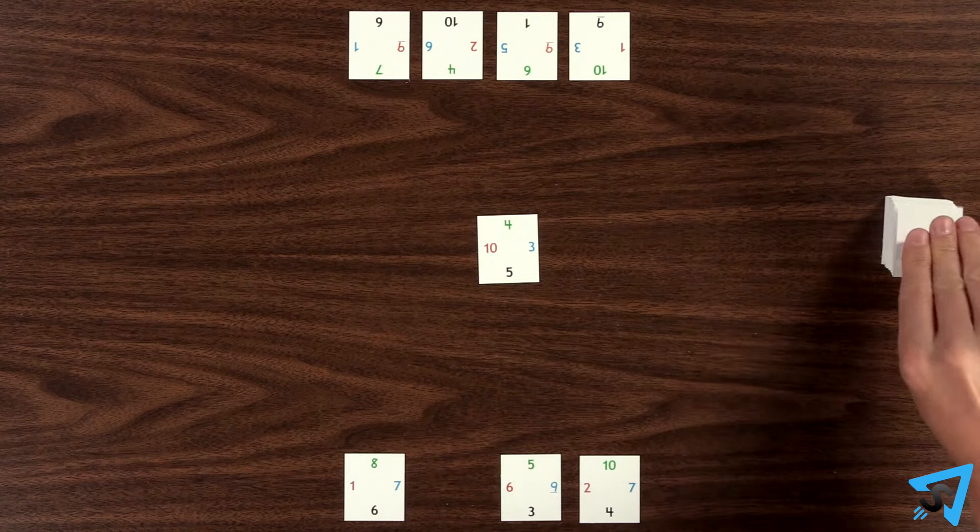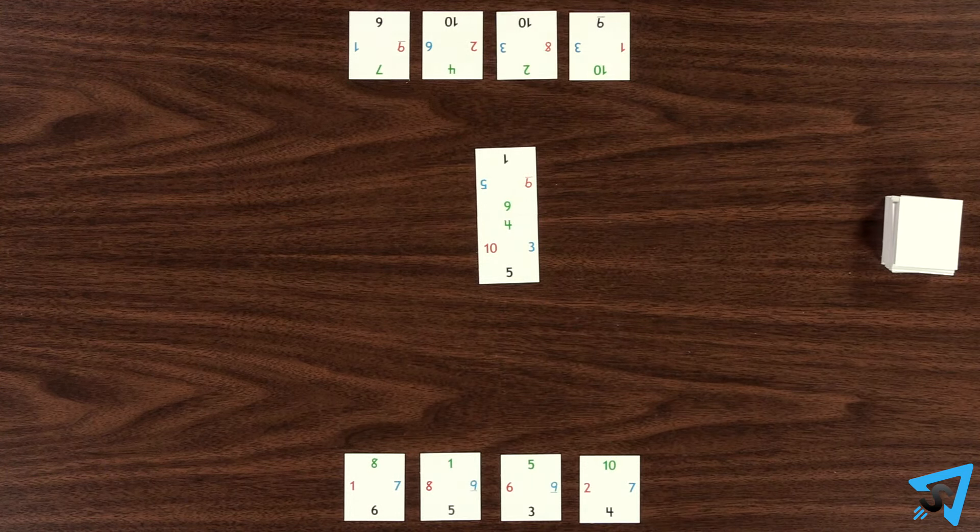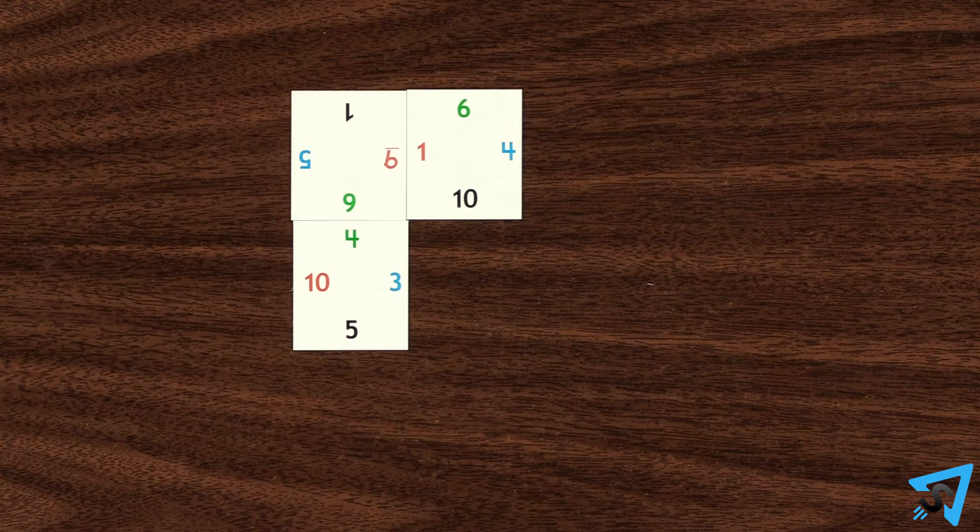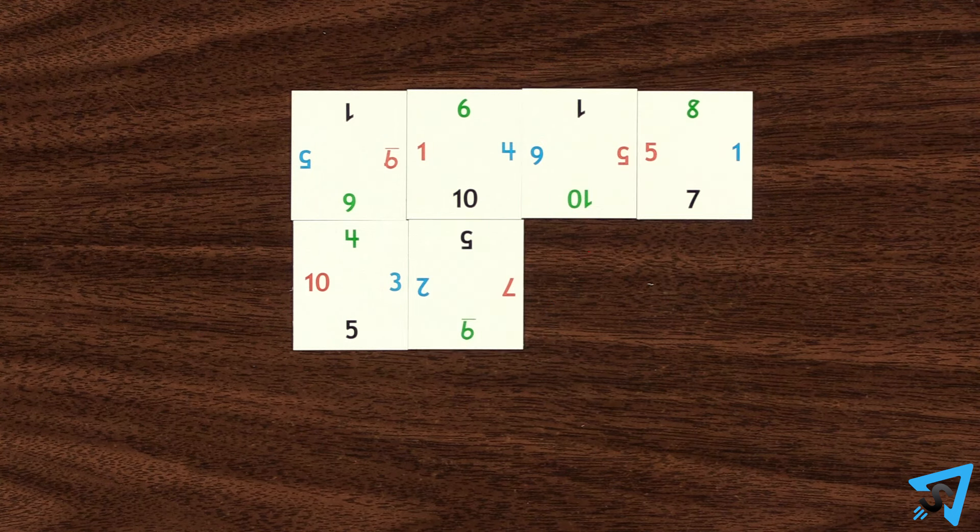Whoever places the first card draws a new card from the deck and play proceeds clockwise. On your turn, you must play one of your cards adjacent to the last card played or to a corner, if possible.